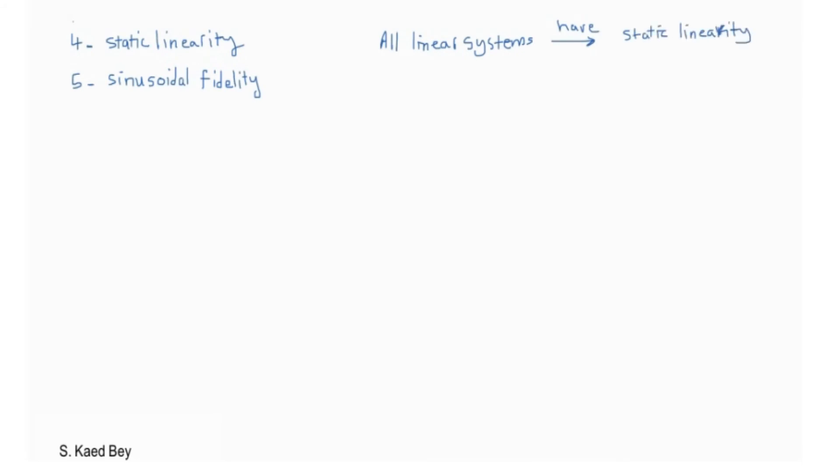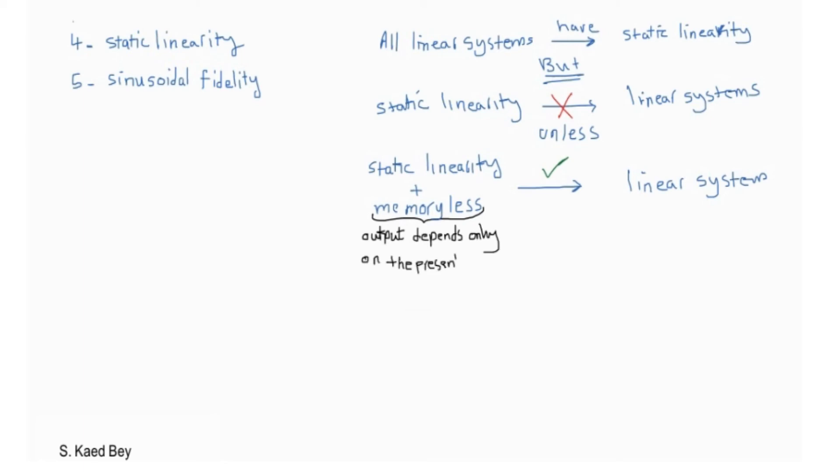All linear systems have the property of static linearity. The opposite is not always true, though. There are systems that show static linearity but are not linear with respect to the changing signals. However, to conclude, if a system has static linearity and is memoryless, i.e., the output depends only on the present state of the input and not on its history, then we can consider the system as linear.